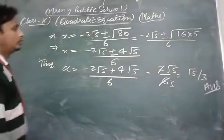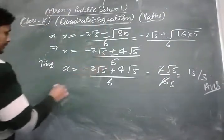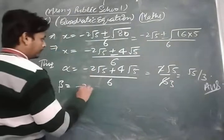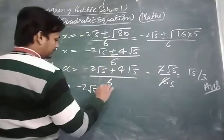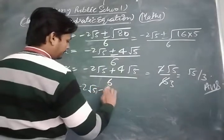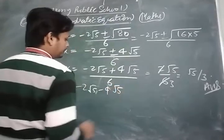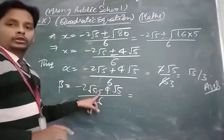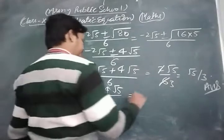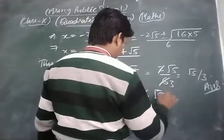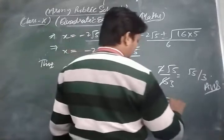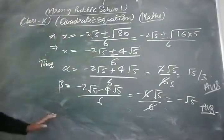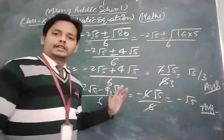For the second root beta, we take the minus sign: β = (-2√5 - 4√5) / 6 = -6√5 / 6 = -√5. So in this way we solve the given equation by using the formula.